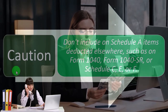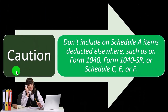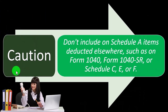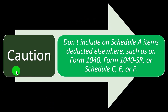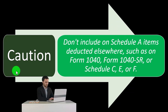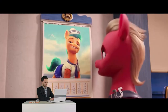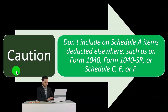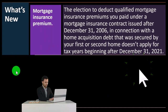An important caution: don't include Schedule A items that were already deducted elsewhere, such as on Schedule C or E. You can't double-dip — if you paid mortgage interest and deducted it on Schedule E, you can't also deduct it on Schedule A. You need to determine where a deduction most properly belongs and allocate it accordingly, whether that's Schedule C, E, or A.